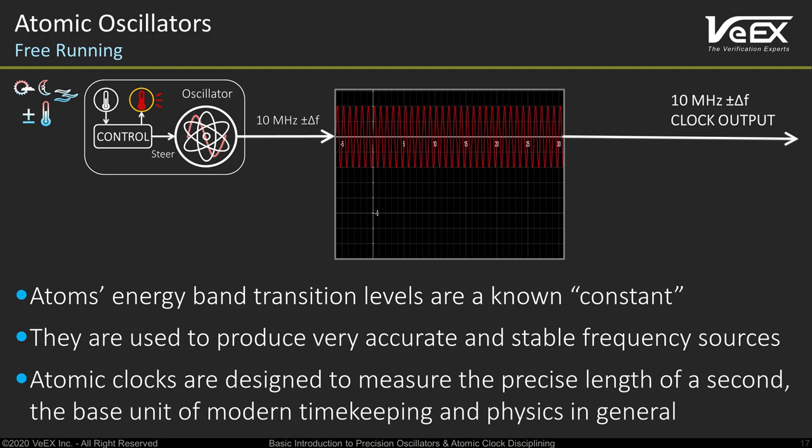We can make it even better if we replace crystal vibrations with atomic resonance — that is, use an atomic oscillator. The physics and diagram can get quite complicated, so let's just say that atomic oscillators are very accurate and have exceptional stability. There are different types based on different elements and techniques. In general, their calibrated free-running accuracy is better than a few parts per trillion — they may gain or lose a few picoseconds every second, but that can still be further improved.